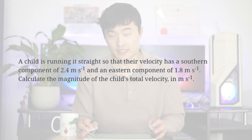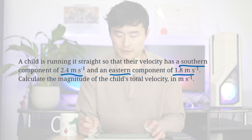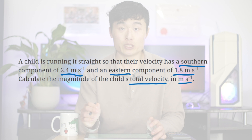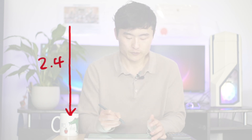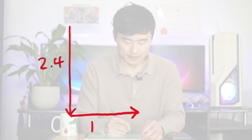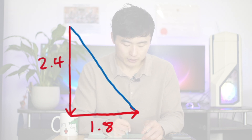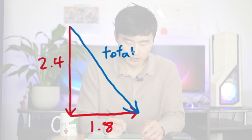For our second question, we have a child that is running such that the velocity has a southern component of 2.4 meters per second and an eastern component of 1.8 meters per second. Calculate the magnitude of the child's total velocity in meters per second. We're going to draw these vectors. The first vector will be the southern component going south, drawn going down, with a magnitude of 2.4. The second vector will be going east with a magnitude of 1.8. We'll draw a line connecting these two vectors, starting from the tail and going to the head of the second vector — that will be our total, which is what we want to find out.